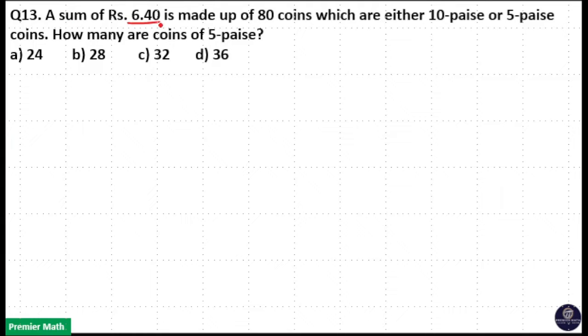A sum of rupees 6.4 is made up of 80 coins which are either 10 paise or 5 paise coins. How many are coins of 5 paise? So you need to find the number of 5 paise coins.